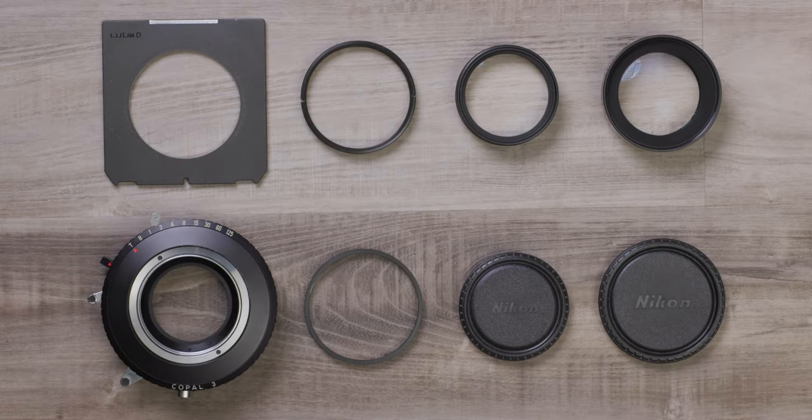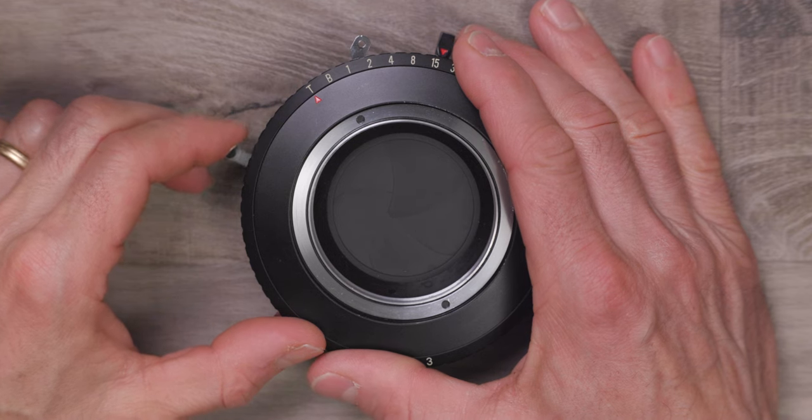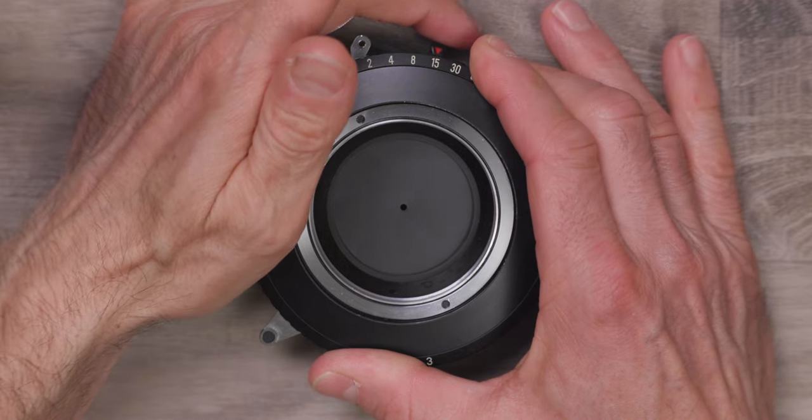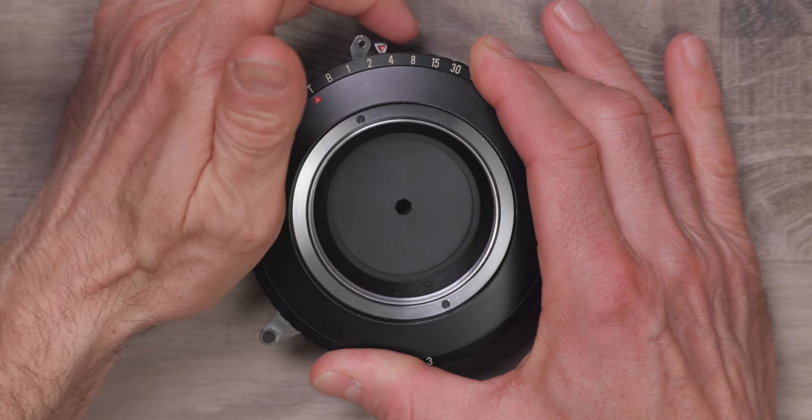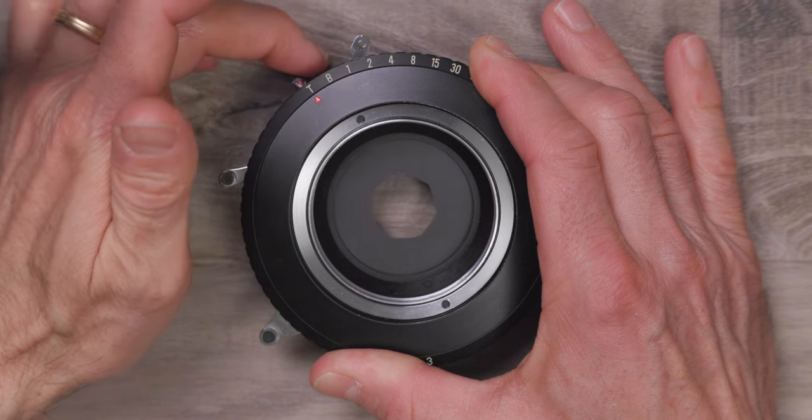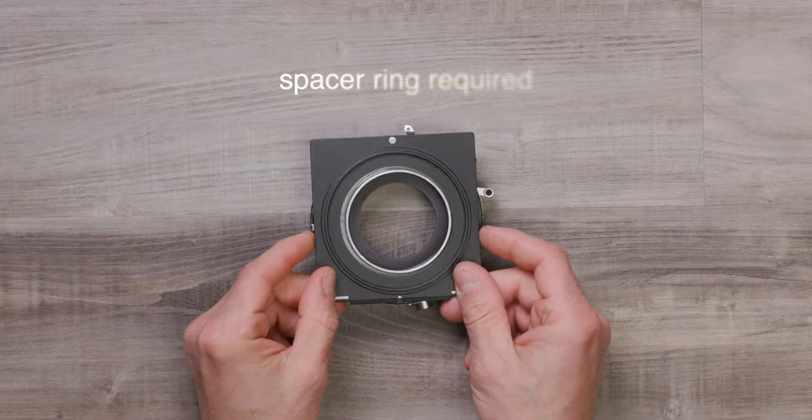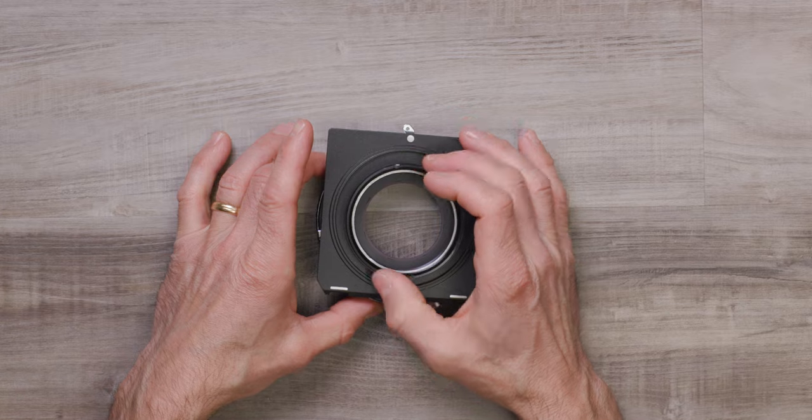Let's assemble this lens outfit. The first thing I like to do is open the press focus lever also called a preview button. Then I slide the aperture to the largest possible setting to minimize the risk of coming into contact with these very fragile blades.